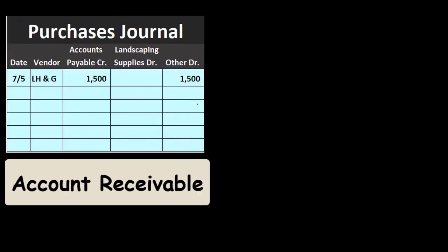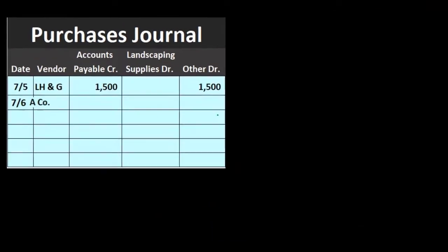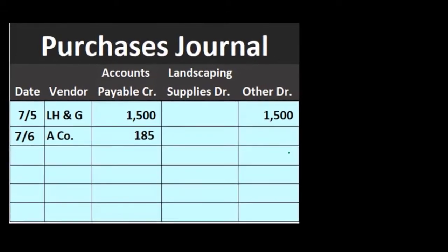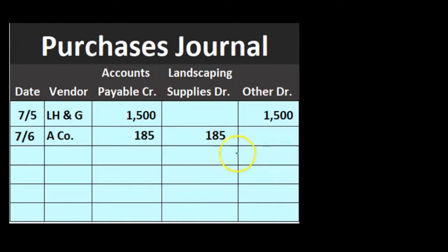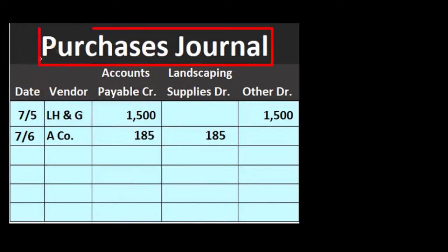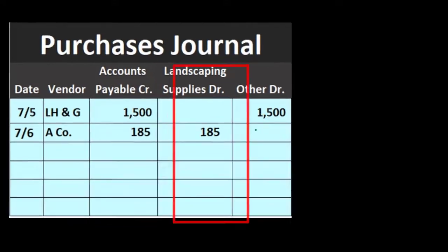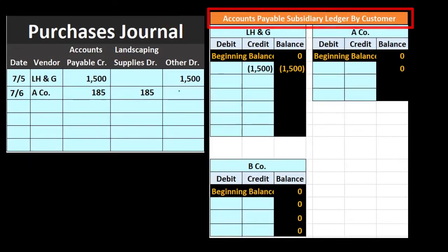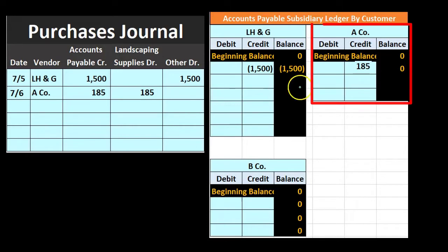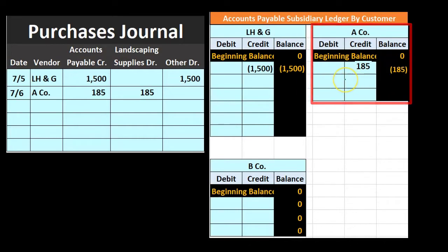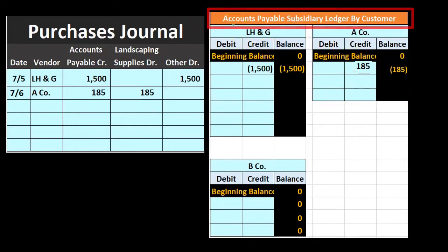Next, on 7/6, a purchase was made on account — accounts payable — for $185, with the other side going to landscaping supplies. We increase accounts payable by $185, as will always be the case when using the purchases journal, with the debit going to landscaping supplies. We then record this to the accounts payable subsidiary ledger for A Company, bringing their balance up to $185.